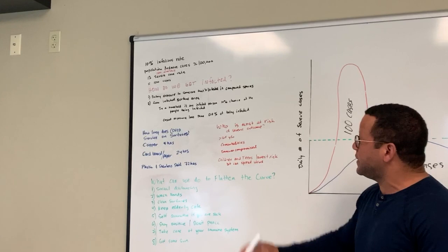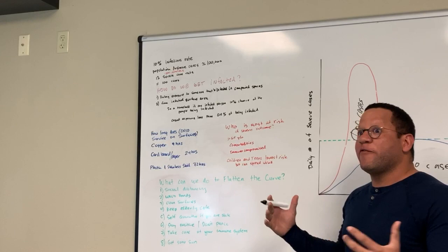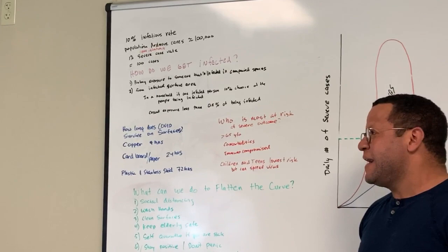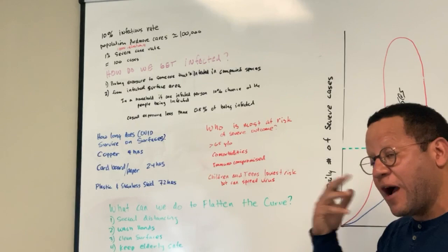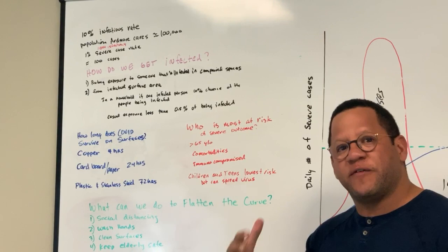These are the things that we can do to flatten the curve. Number one, social distancing. Social distancing does work just because we know that a casual contact is 0.5% of infection. So stay away from major crowded areas. If you're going to public, stay three to six feet from someone. Everything you touch out in public, make sure you wash your hands before you touch your nose or your eyes or your mouth. Wash your hands. Wash your hands at home. Wash your hands anytime you touch anything. That's very important to decrease the viral load on your hands.